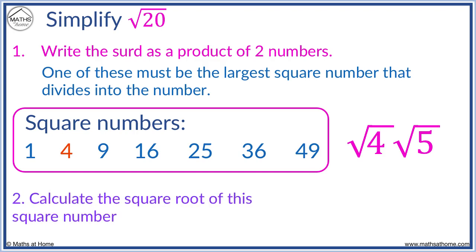We now simply square root the 4 to get 2. We cannot square root the 5 exactly so we leave it as root 5. Root 20 simplified is 2 root 5.